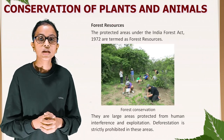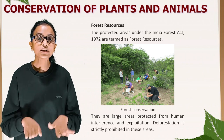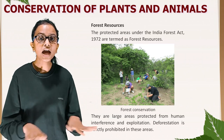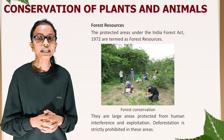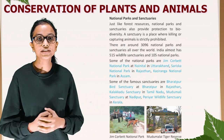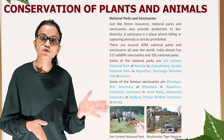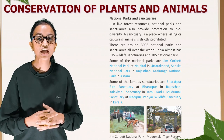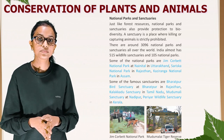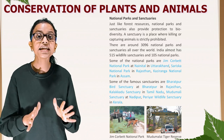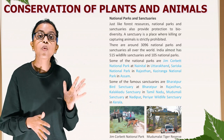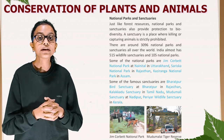Forest resources: the protected areas under the Indian Forest Act 1972 are termed as forest resources. They are large areas protected from human interference and exploitation, and deforestation is strictly prohibited in these areas. National parks and sanctuaries, just like forest resources, also provide protection to biodiversity. A sanctuary is a place where killing or capturing animals is strictly prohibited. There are around 3,096 national parks and sanctuaries all over the world, and India has almost 515 wildlife sanctuaries and 105 national parks.